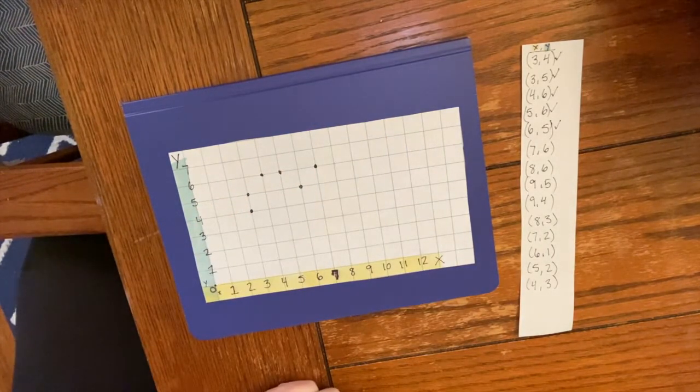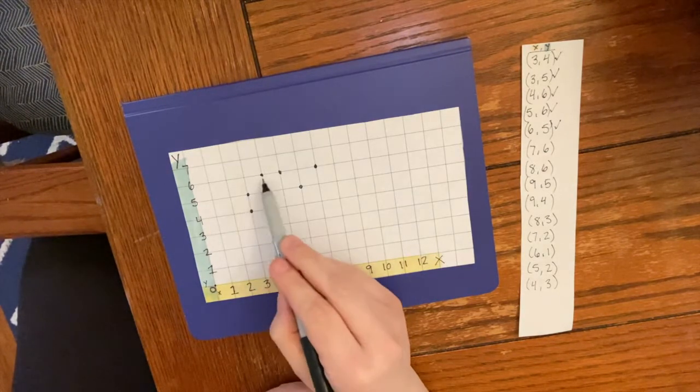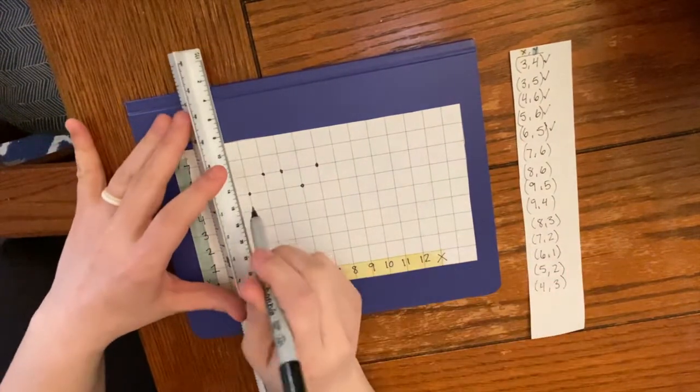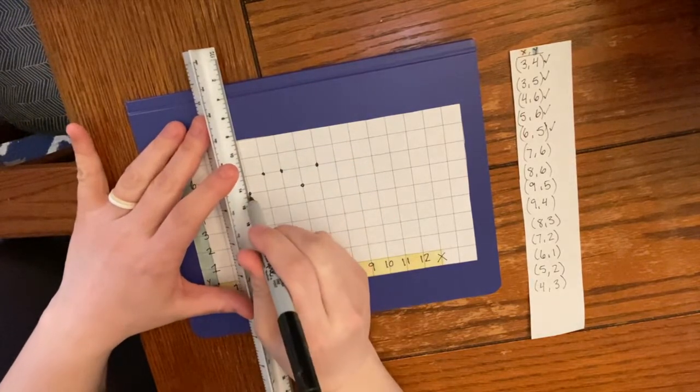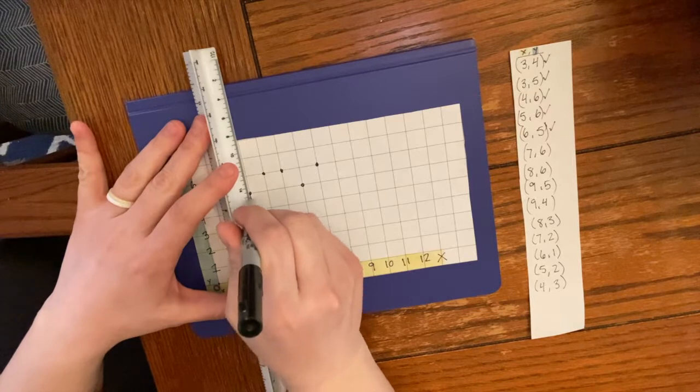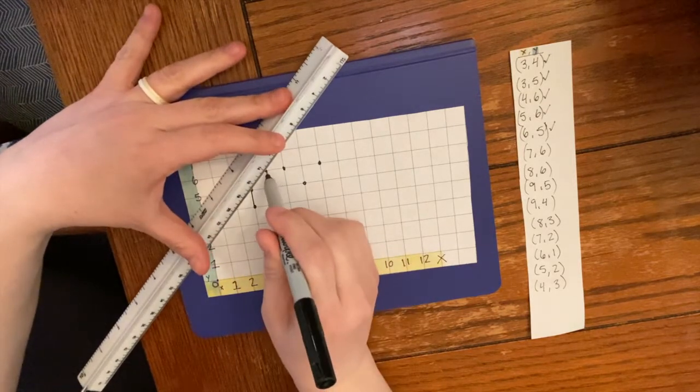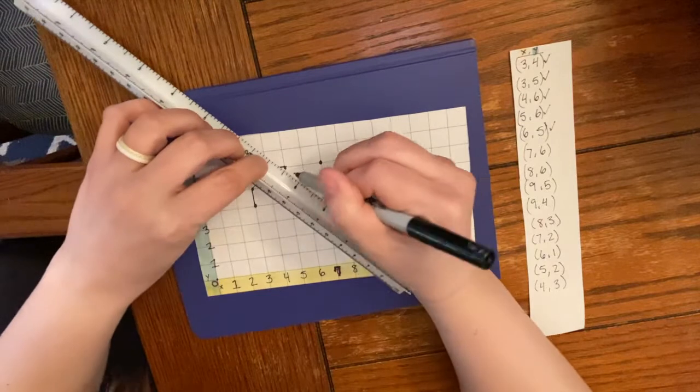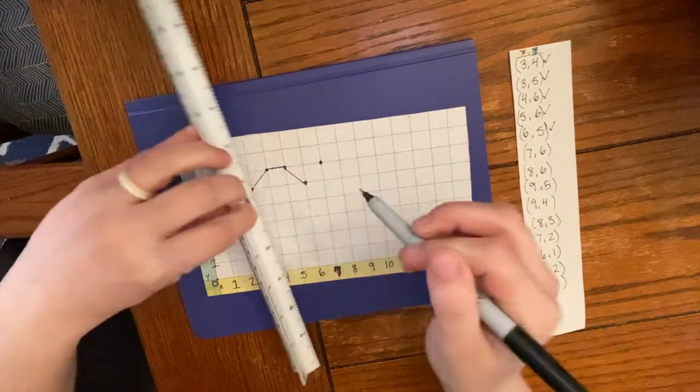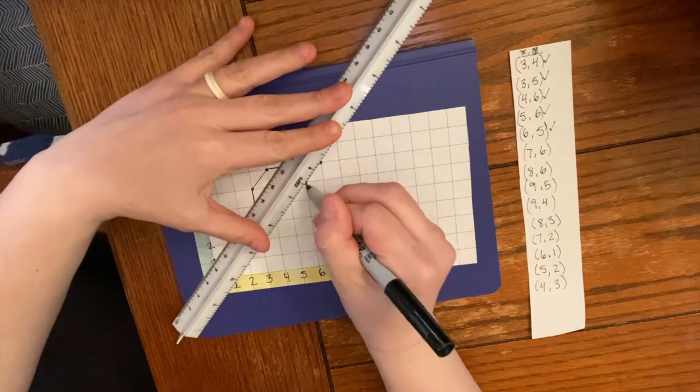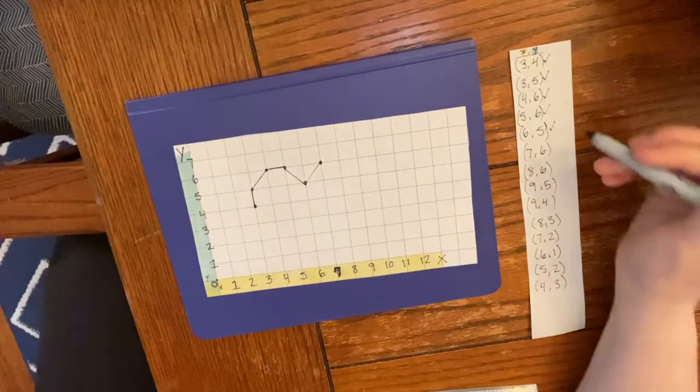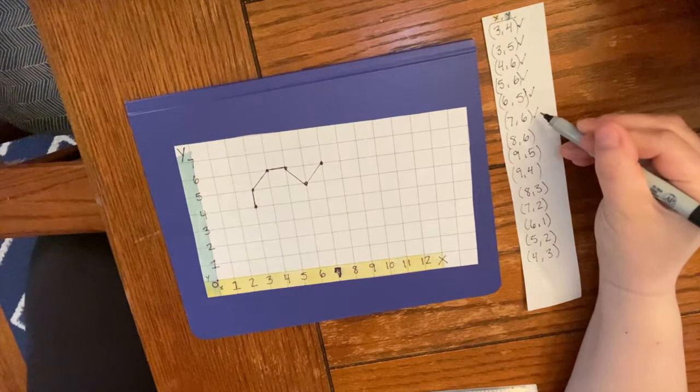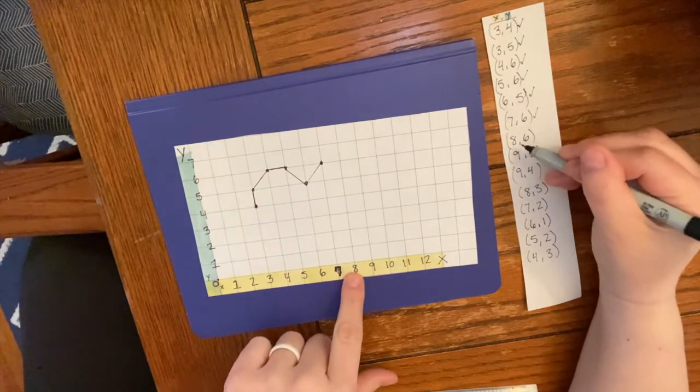Now we have 6 on the x-axis and 5 on the y. Now 7 on the x-axis and 6 on the y-axis. You know what, I'm going to start using a ruler now. I'm actually going to draw and connect my dots. I'm going to connect these in order and we're going to do this every single time we put a mark so that we don't get confused.